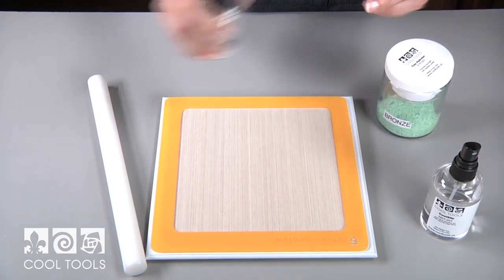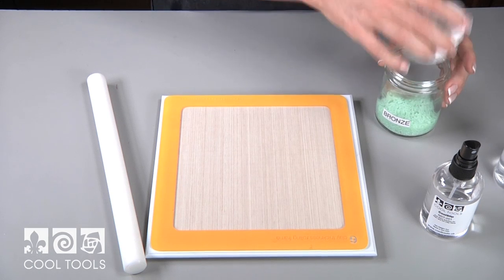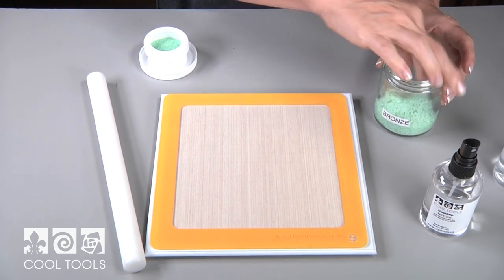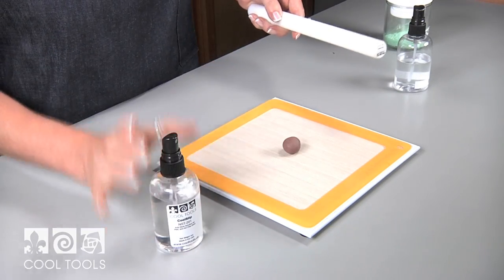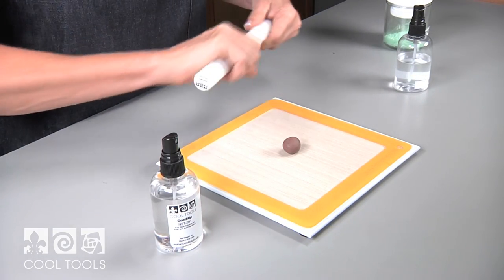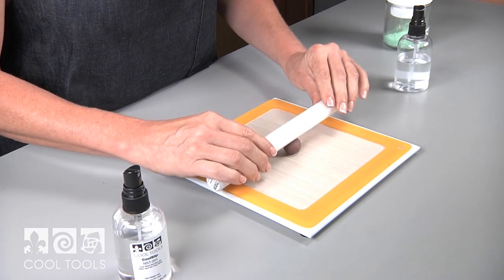Start by spritzing your work surface and roller with the water lavender mixture. Roll the clay out to six cards thick. Here I'm using our number six rolling frame.